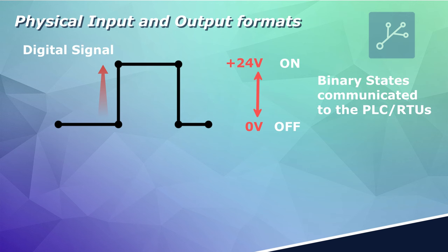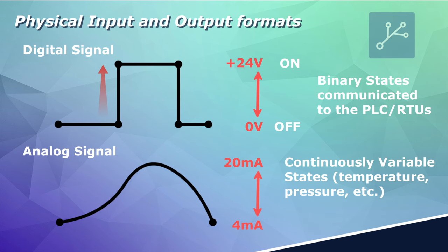Input can be also in a 4 to 20 milliamps analog format, and the output can be in 4 to 20 milliamps format as well. In some other instances, the analog signals can also be in a 0 to 5 volts or a 0 to 10 volts.